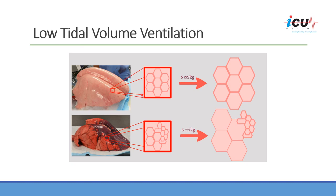If you have a normal healthy recruited lung and you apply 6 ml per kg during inspiration, this will result in even distribution and even expansion of the alveoli throughout the alveolar surface area. Compared to putting the same amount of air into a diseased lung — where we have areas that are collapsed and areas that are normal — the air will preferentially go into the normal alveoli, resulting in much more expansion of those alveoli. This healthier area of the lung will endure much more strain.